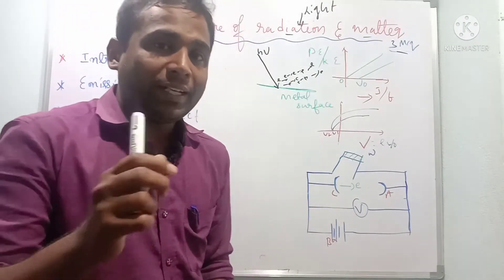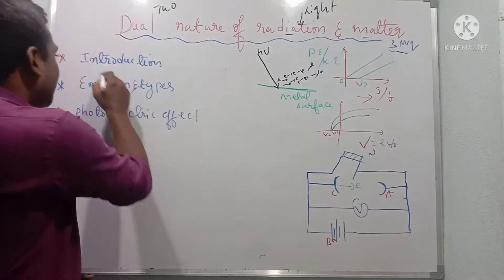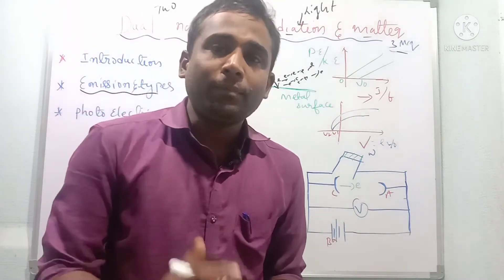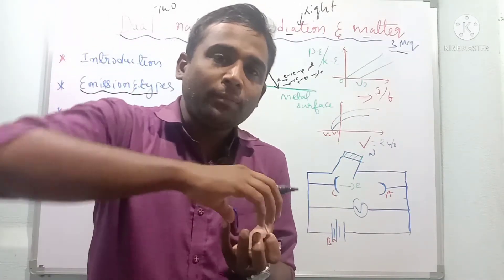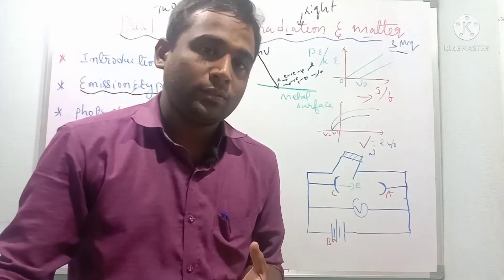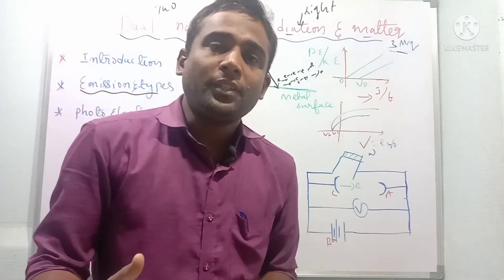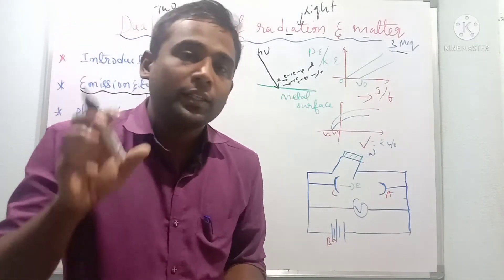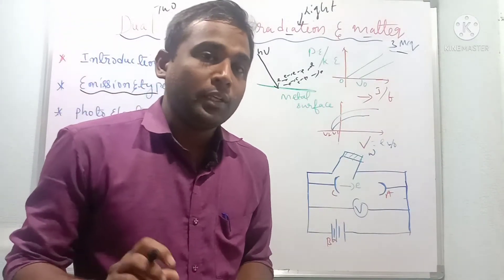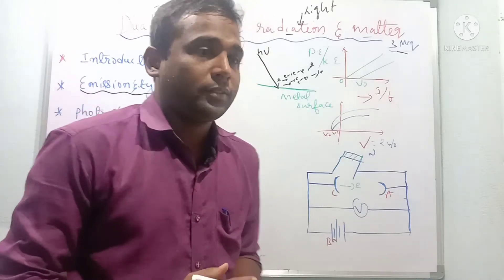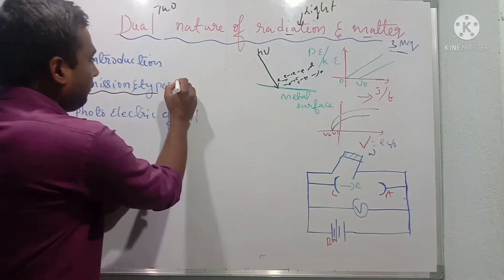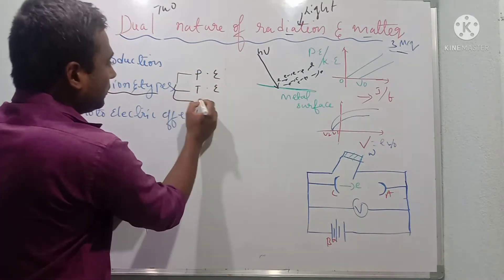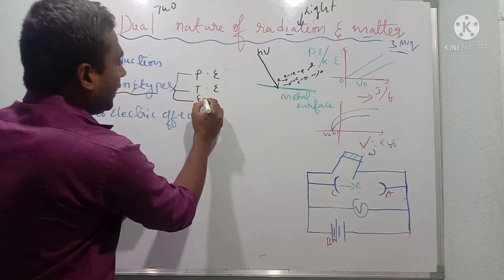Now let us understand emission and types of emission. Emission means coming outside. The process of electrons coming out of the metal surface is called emission. We have different types: photoelectric emission, thermionic emission, electric field emission, and secondary emission.